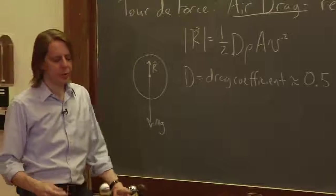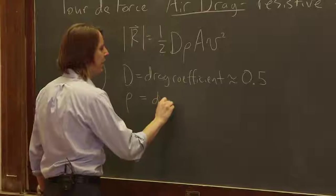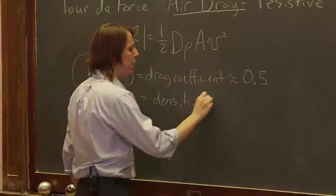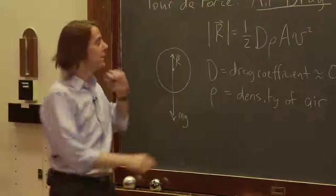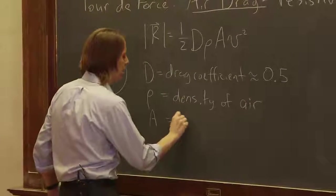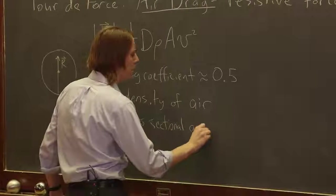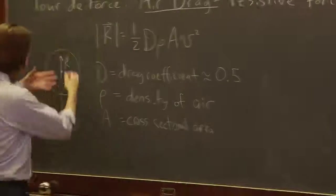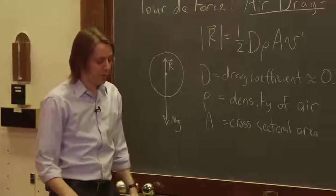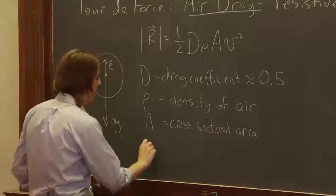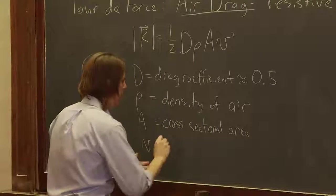Rho is the density of air, which is rather low. A is the cross-sectional area of the object dropping, so not the surface area but the cross-sectional area, whatever the air sees as the ball or the object falls. And then v is the velocity magnitude, the speed, and it's squared.